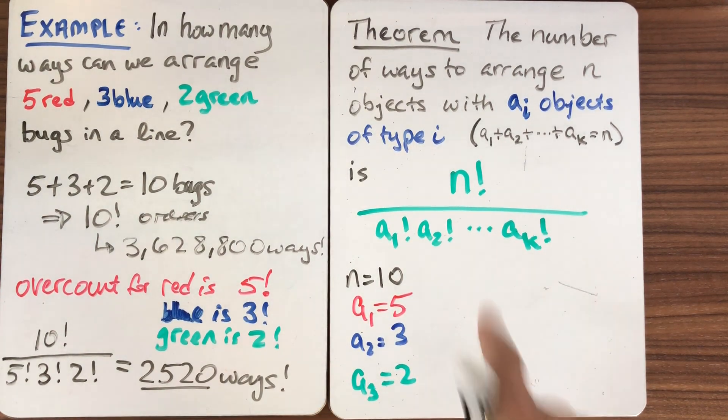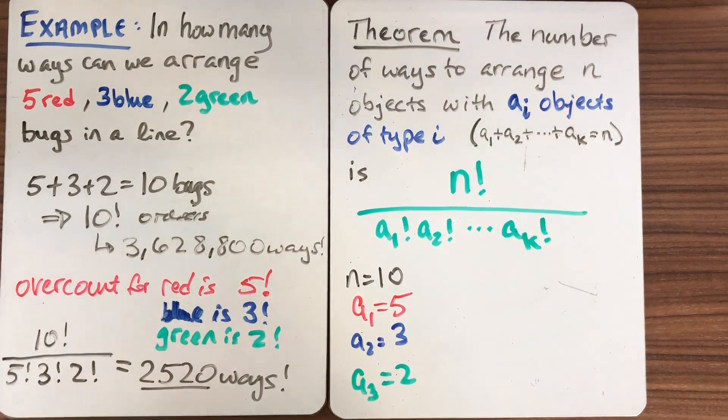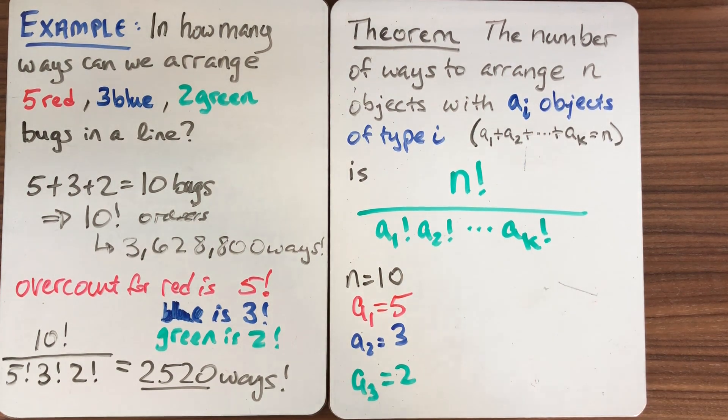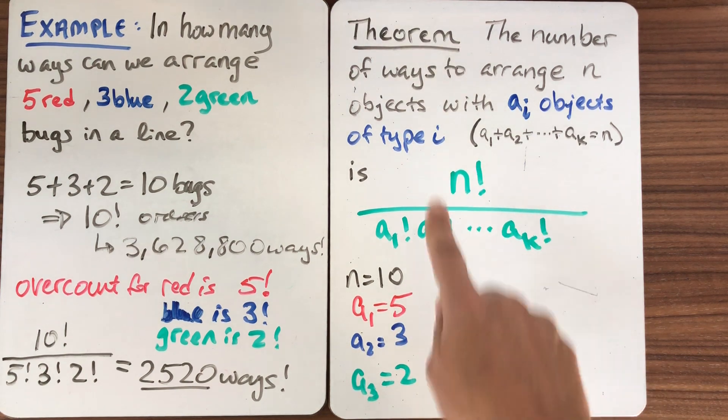And so this is the formula that we get in general. And this is an important one to keep in mind whenever you're counting things where there are multiple ones of the same type. And you can do a sanity check on this example. If we take all of the a1s to be 1, that means all of our objects are different. They're different types.